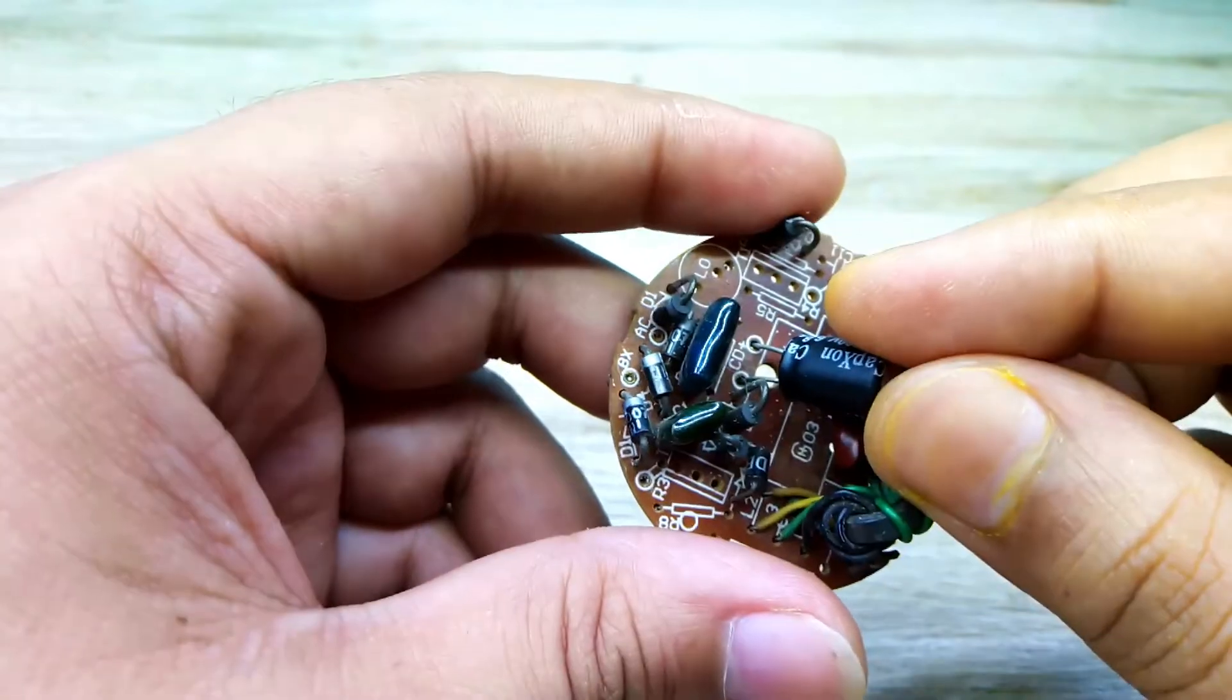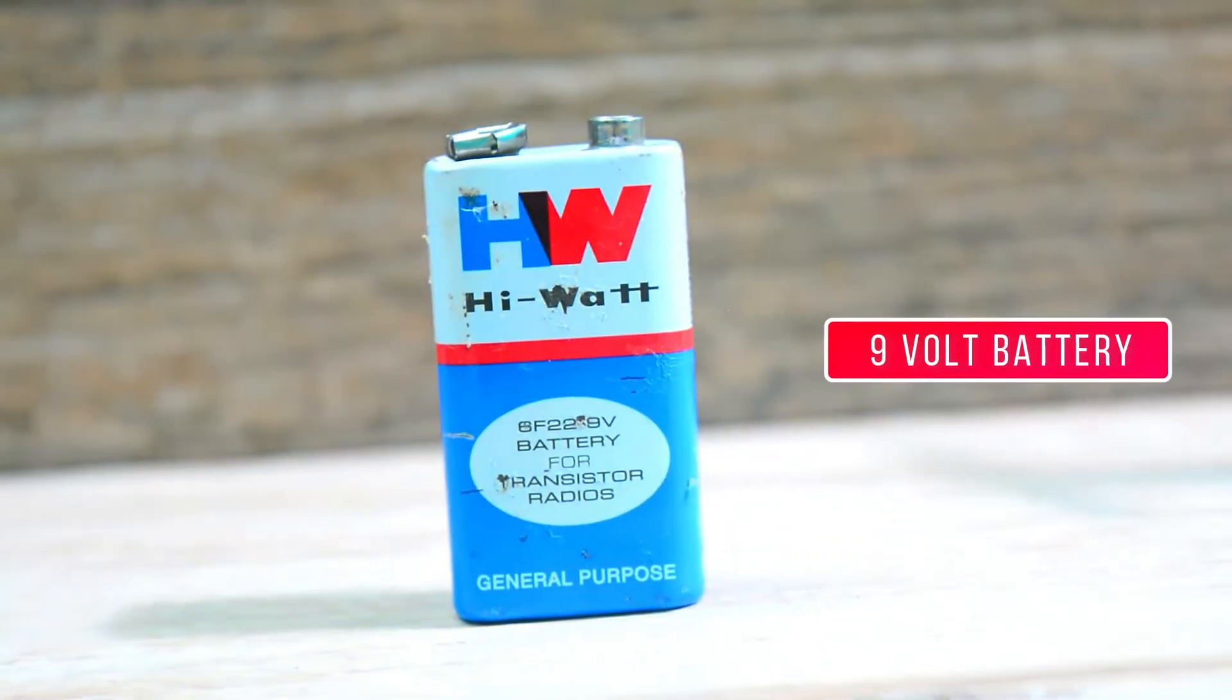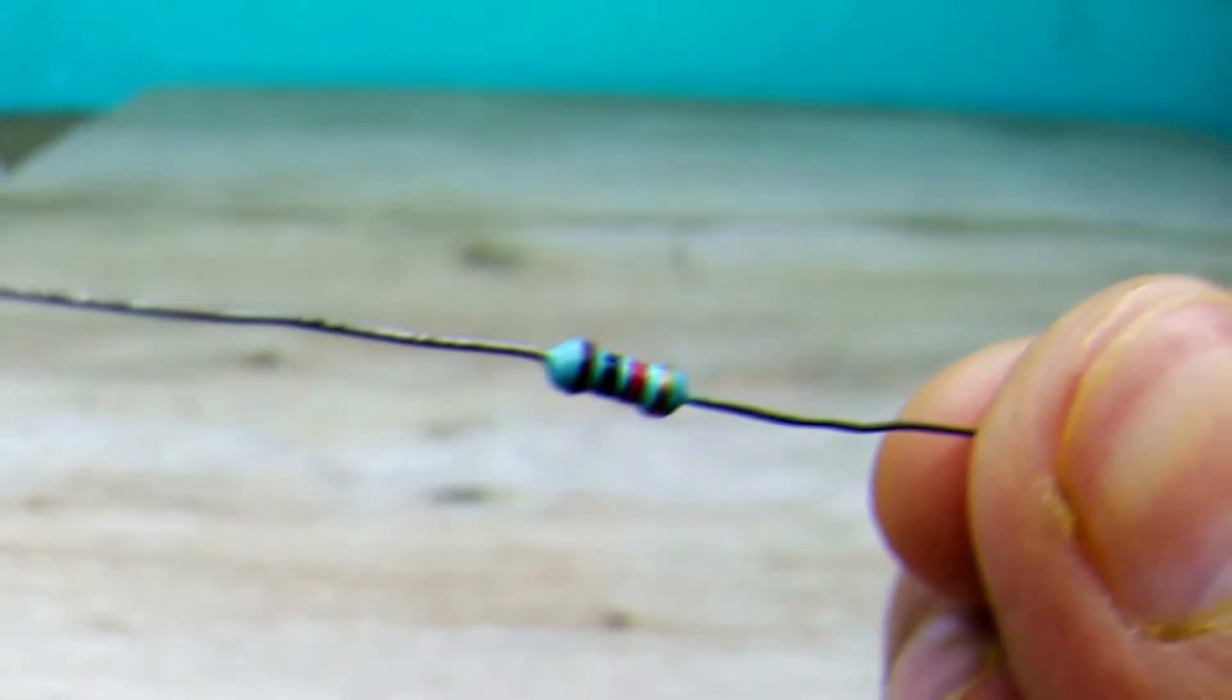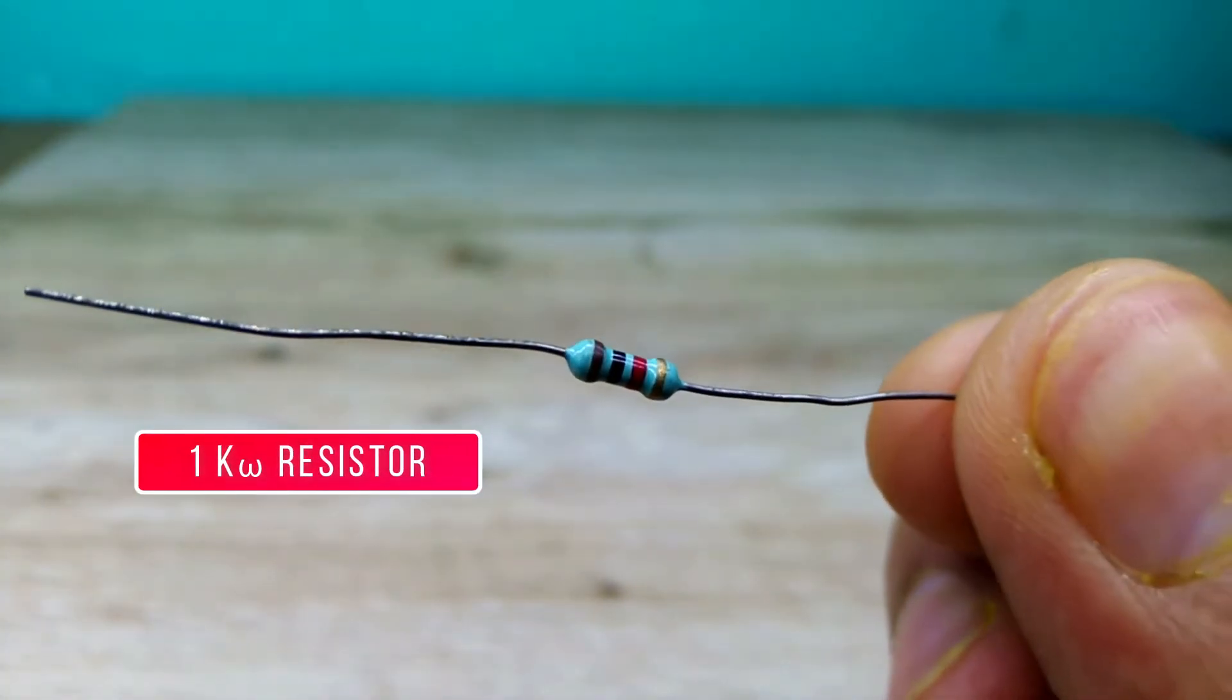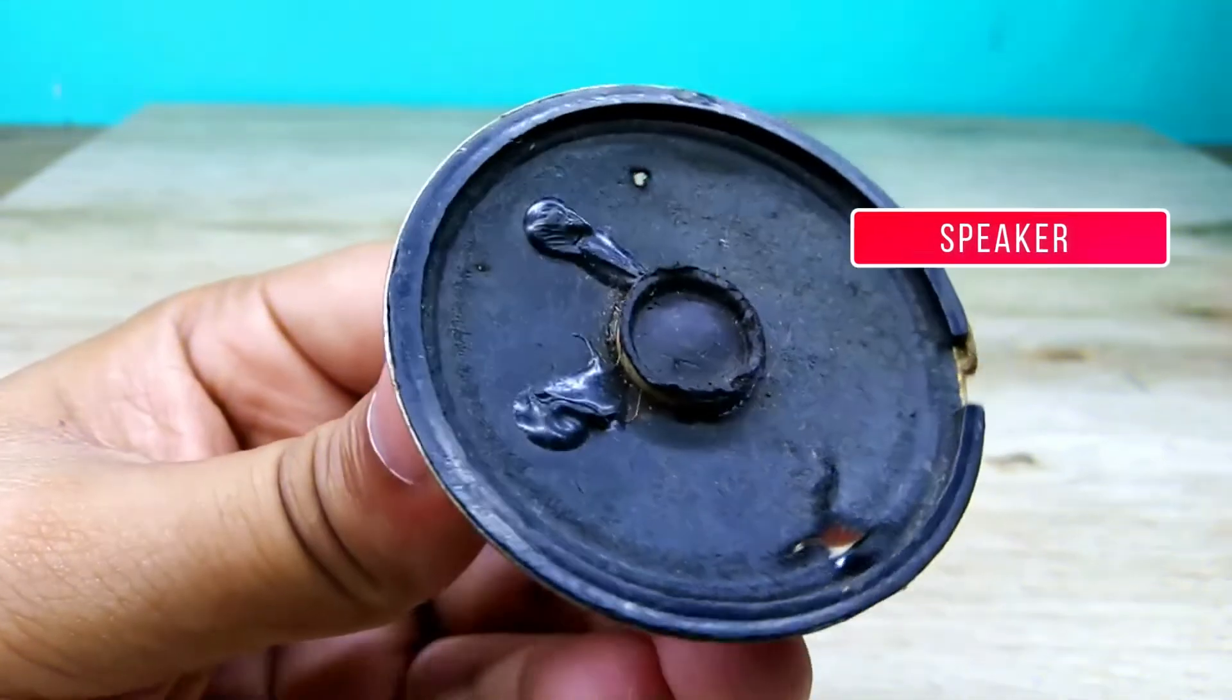This is a 9 volt battery. This is a 1 kilowatt resistor. This is a small low watt speaker.